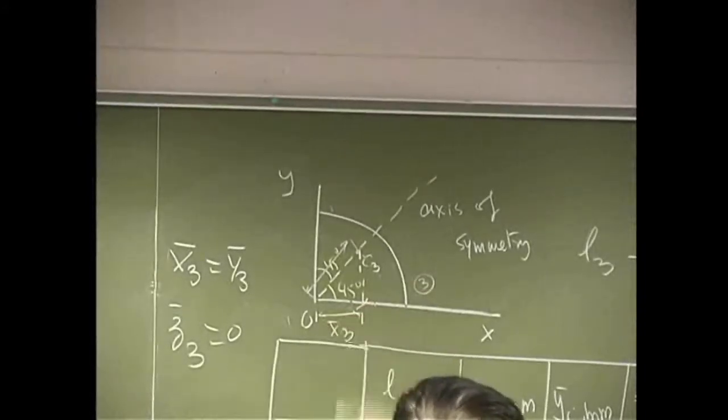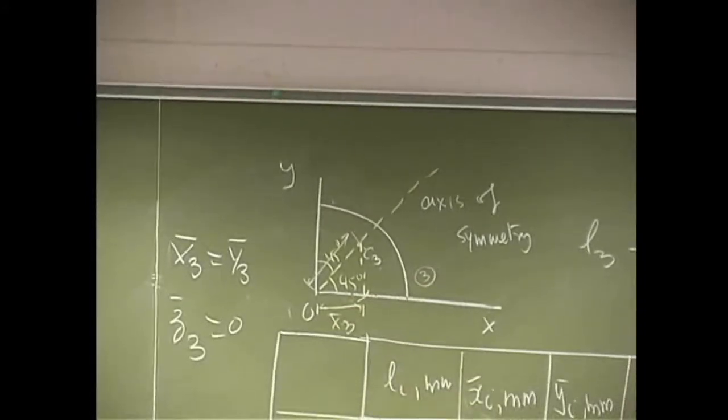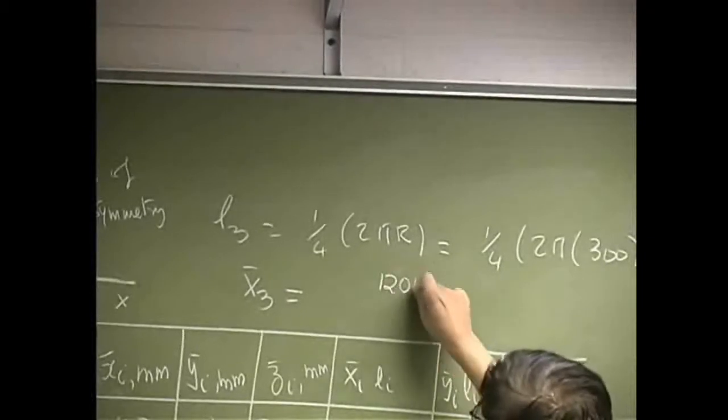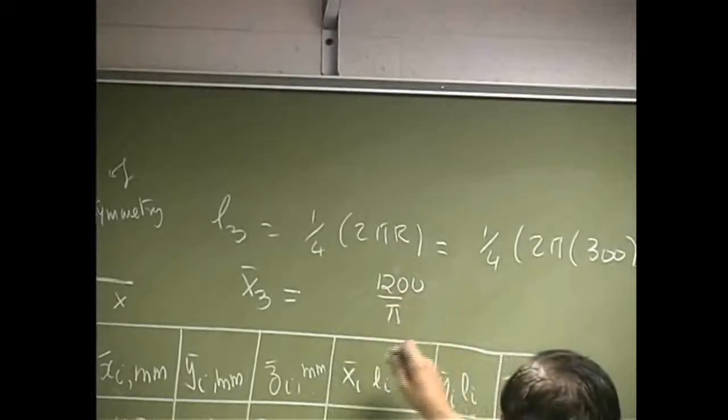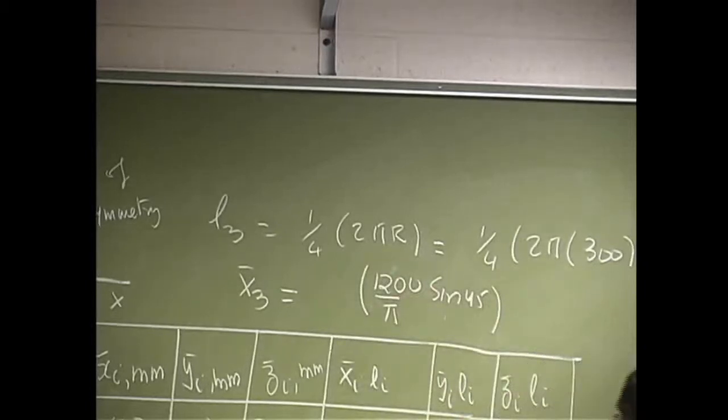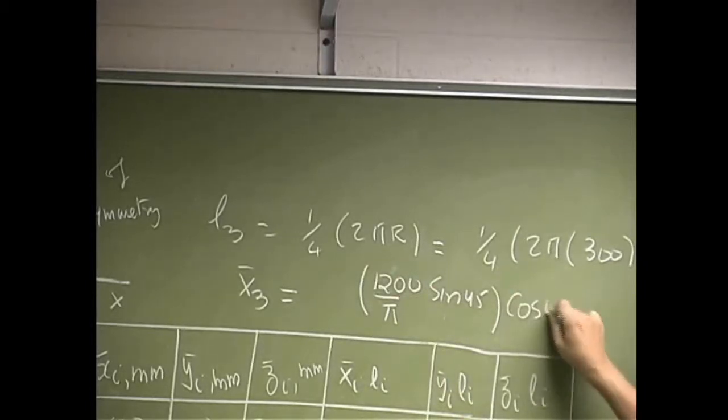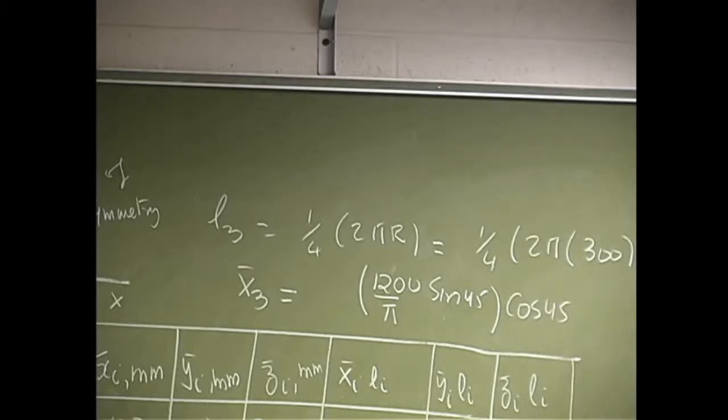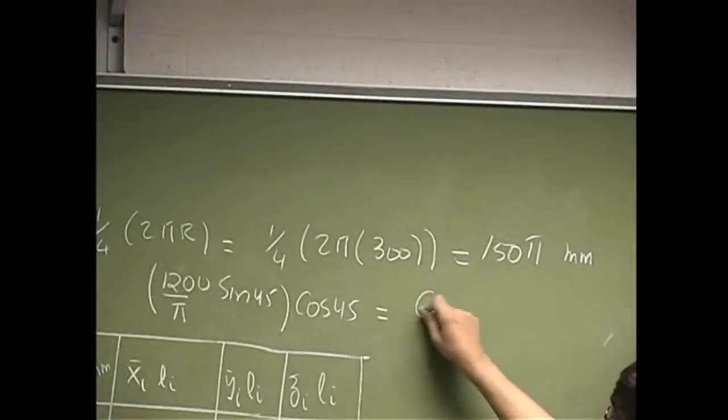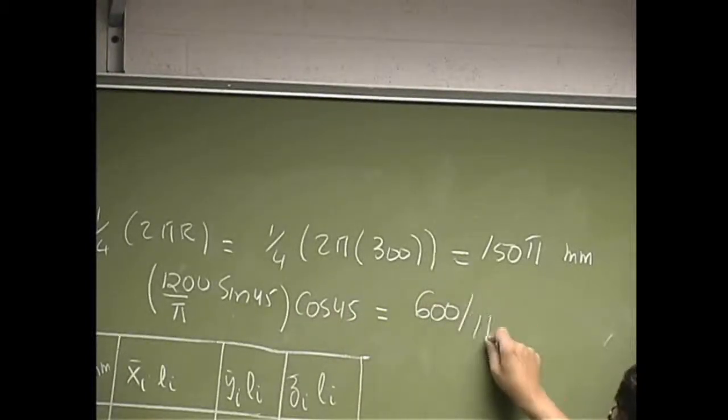That's going to be x3 bar. So from that figure, x3 bar should be this distance which is 1200 over pi sine 45, and you've got to multiply this by cosine 45, so that's 1 over root 2. This thing is going to come out to be 600 over pi.